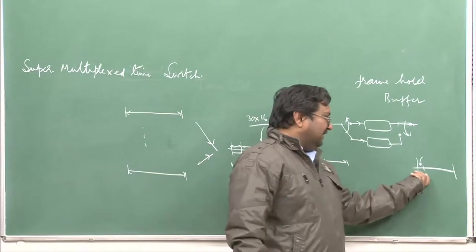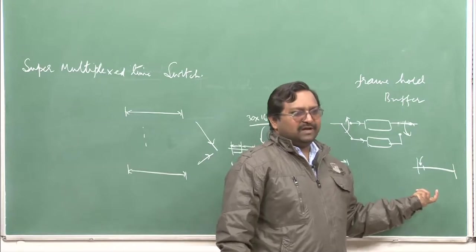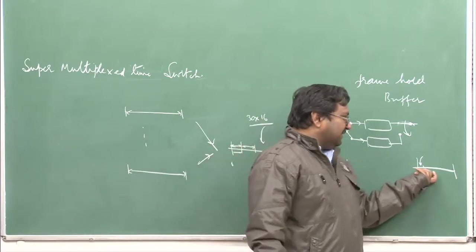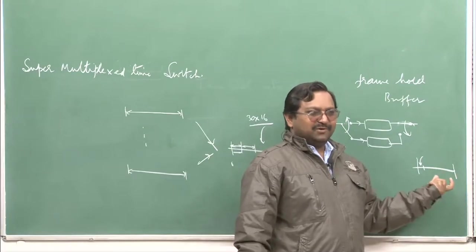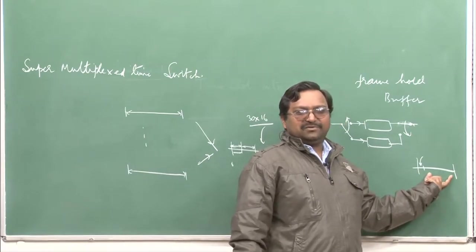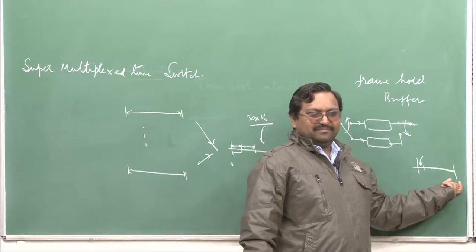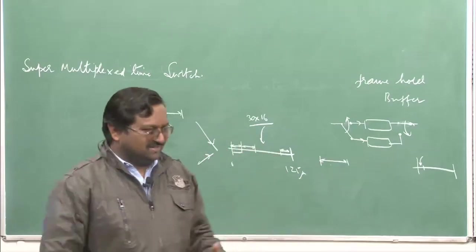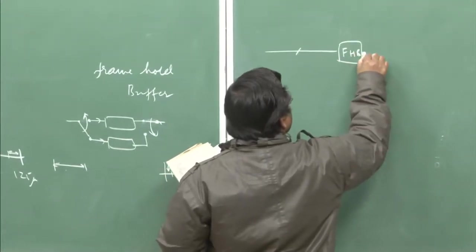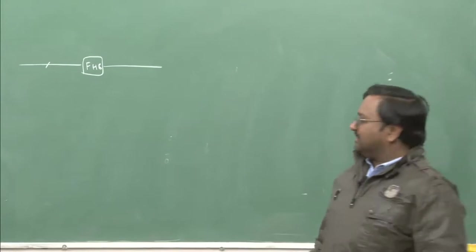If you put it all into one compressed region, what happens to the remaining period? Do not make it silent in a synchronous system. Instead, let it read 16 times — you get the same frame replicated 16 times. So read it 16 times faster, keep the frame synchronization, and you get the same thing repeated 16 times in this super frame. This is time compression via the frame hold buffer.